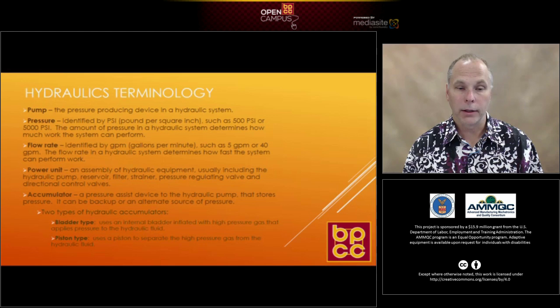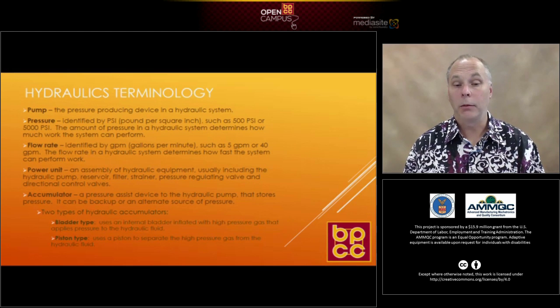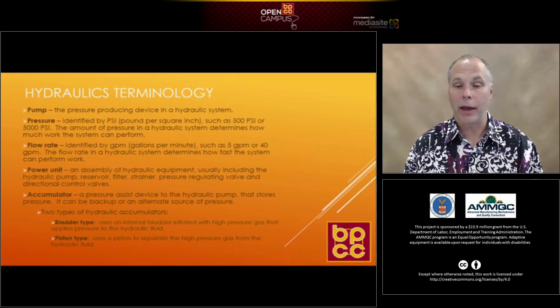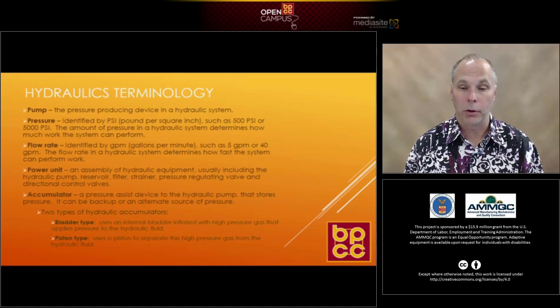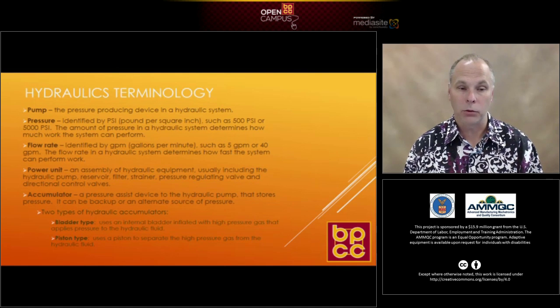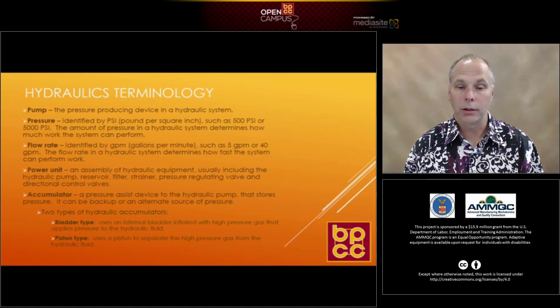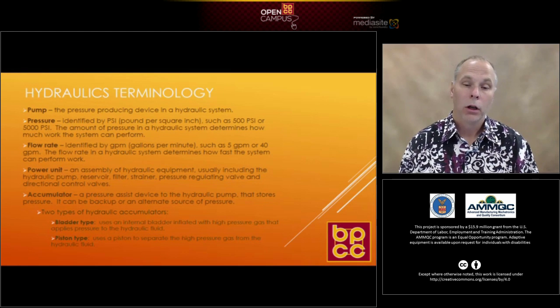Flow rate is identified by GPM — gallons per minute — such as five gallons per minute or even 40 gallons per minute. Those are just examples. The flow rate of a hydraulic system determines how fast the system can perform work.